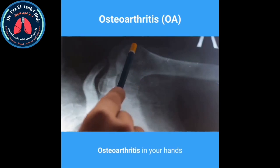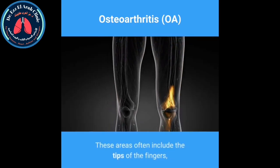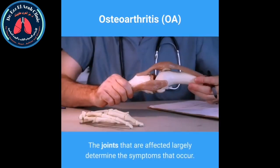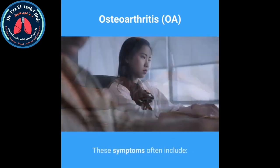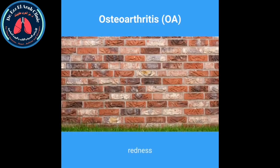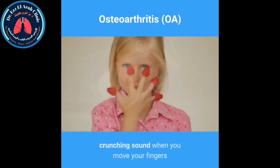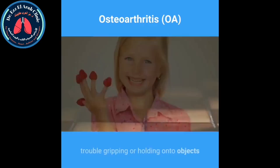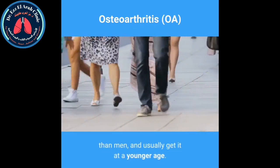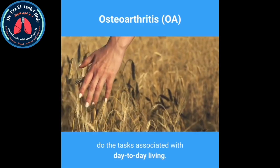Osteoarthritis in your hands. Osteoarthritis can affect one or several areas of your hands, including the tips of the fingers, the middle knuckle of each finger, the joint connecting the thumb and the wrist, and the wrist itself. Symptoms often include stiffness, pain, swelling, redness, weakness, trouble moving your fingers, reduced range of motion, a crunching sound when moving your fingers, and trouble gripping or holding objects. Women are more prone to OA in the hand than men and usually develop it at a younger age.